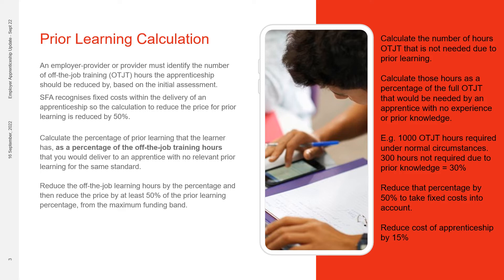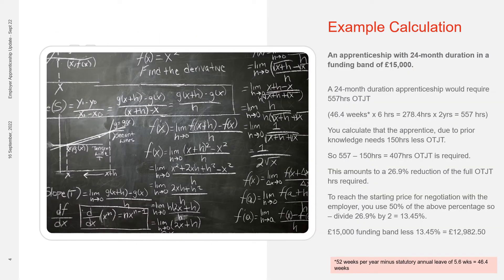Now we will look at an actual calculation for an actual apprenticeship. In this example, we are using an apprenticeship with a 24-month duration in a funding band of £15,000. A 24-month apprenticeship would require 557 hours of off-the-job training as a minimum. That's 46.4 weeks times 6 hours, which equals 278.4 hours, times 2 years. For ease of calculation, I've rounded this up to 557 hours. Remember that each year there are 52 weeks minus the statutory annual leave of 5.6 weeks, which gives you that calculation of 46.4 weeks.